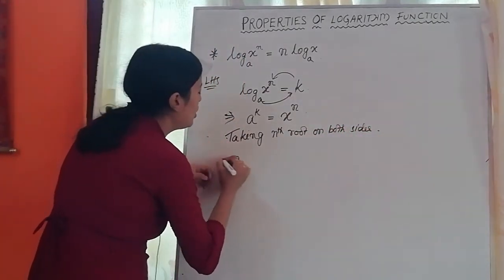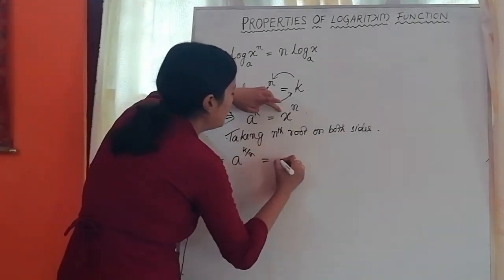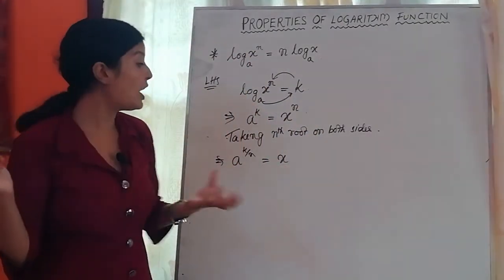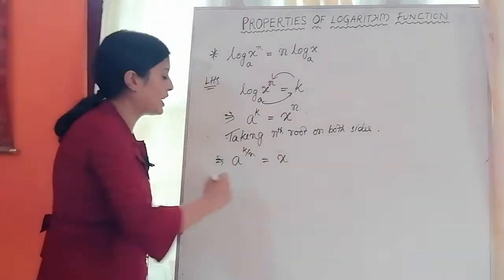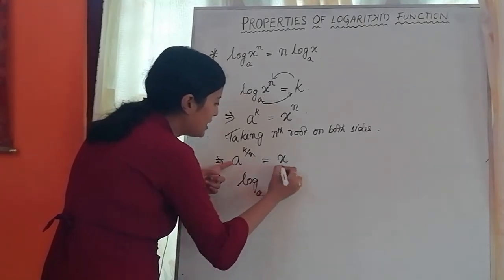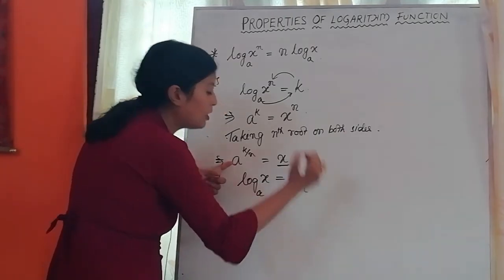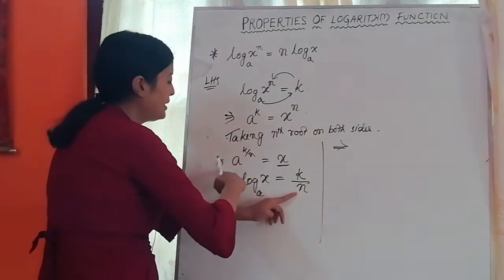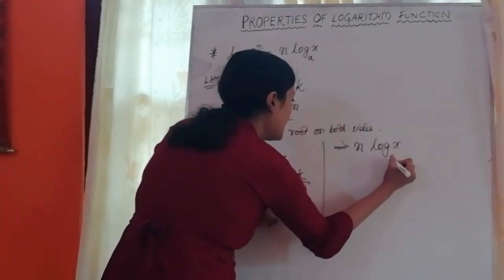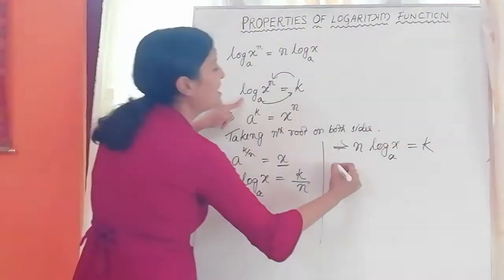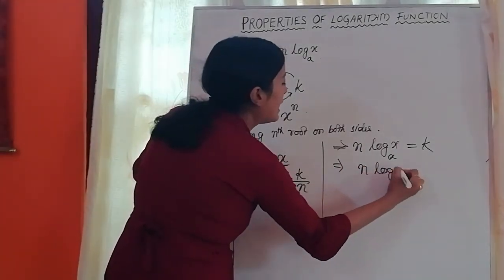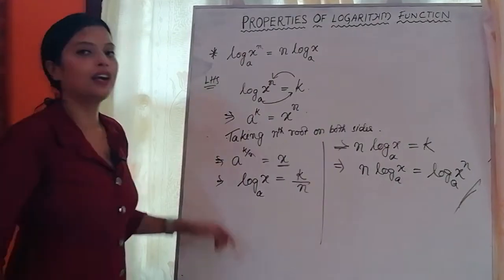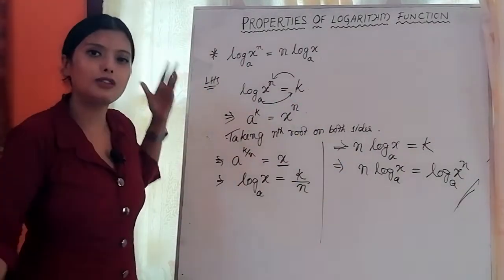So a to the power (k/n) equals x. Now taking the logarithm with base a on both sides, the power (k/n) comes down, giving k/n equals log x base a. Multiplying both sides by n: n times log x base a equals k. Since k equals log(xⁿ) base a, we get: n log x base a is equal to log x to the power n base a. Proved.